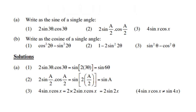Now let's reverse the rule — write expressions as a sine of a single angle. For 2 sin 3θ cos 3θ, this can be rewritten as sine of twice 3θ, which is sine of 6θ. For 2 sin(a/2) cos(a/2), reversing the rule gives sine of twice a/2, which is sine of a.